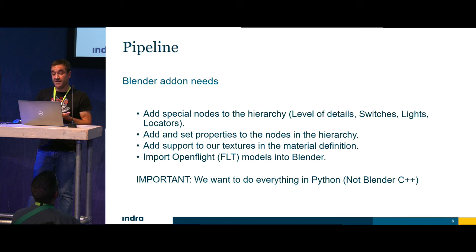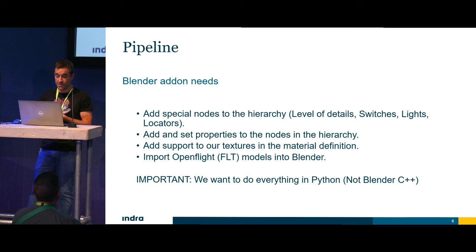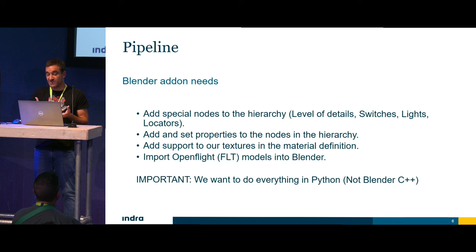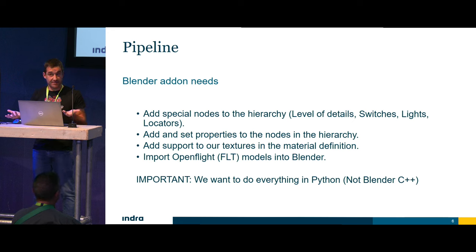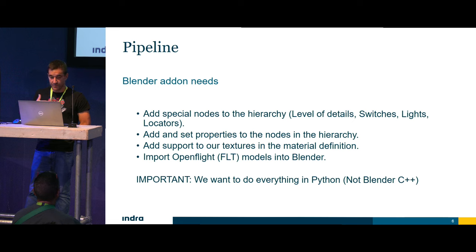When we decided to change our pipeline, we had some needs from Blender. The first thing we did was develop an add-on that lets the user provide all the information that our engine needs. We need to add special nodes to the hierarchy — level of details, switches, different kinds of lights that Blender doesn't have, or locators that specify positions in the model. We need to set properties to nodes in the hierarchy, add support for our material definition, and handle other kinds of textures — maybe infrared or thermal textures for the flight simulator.